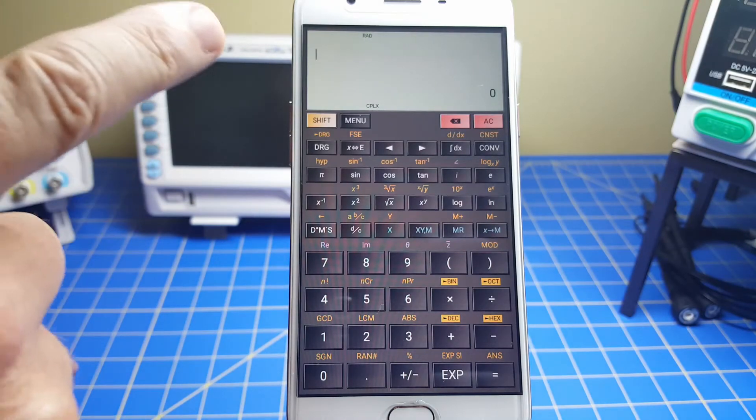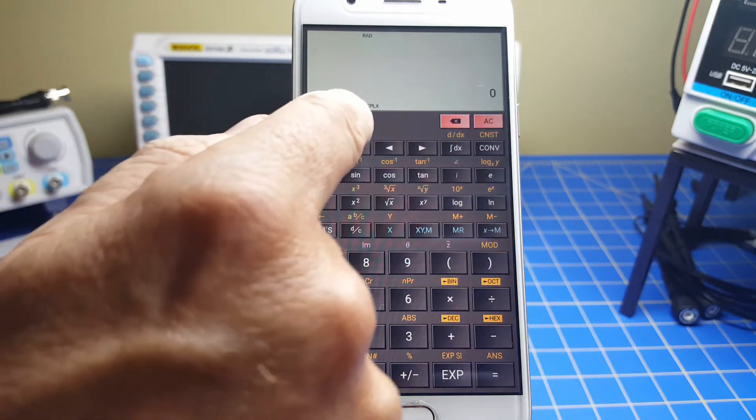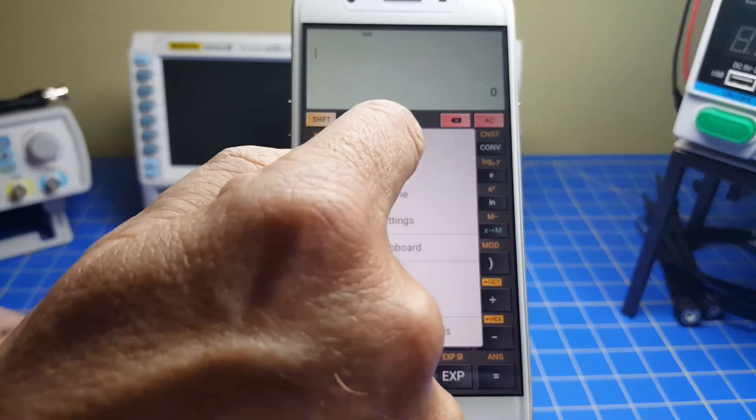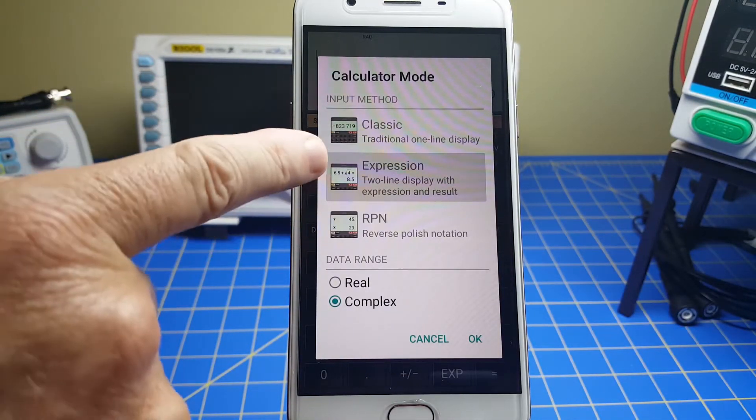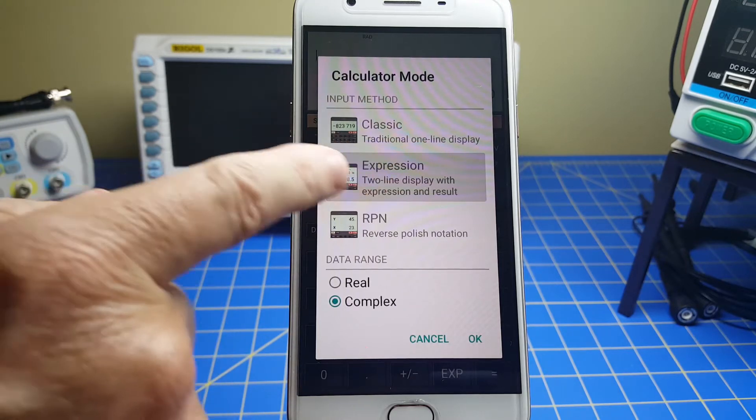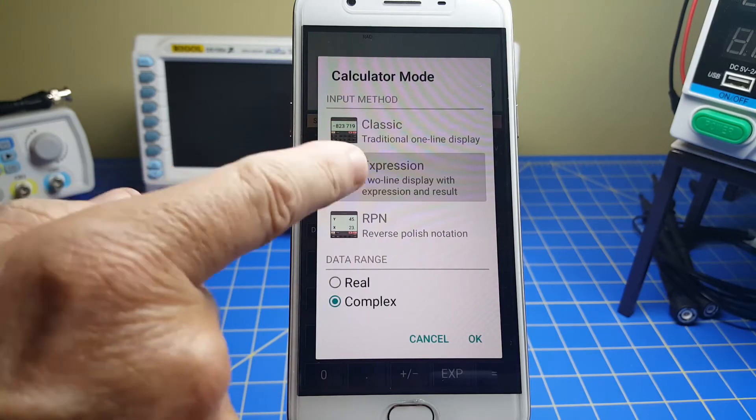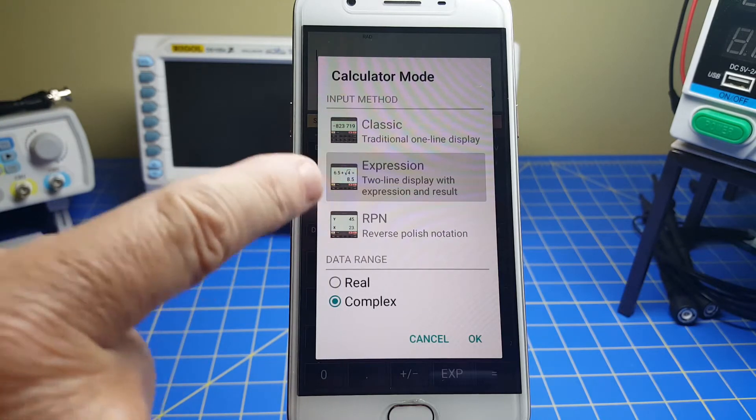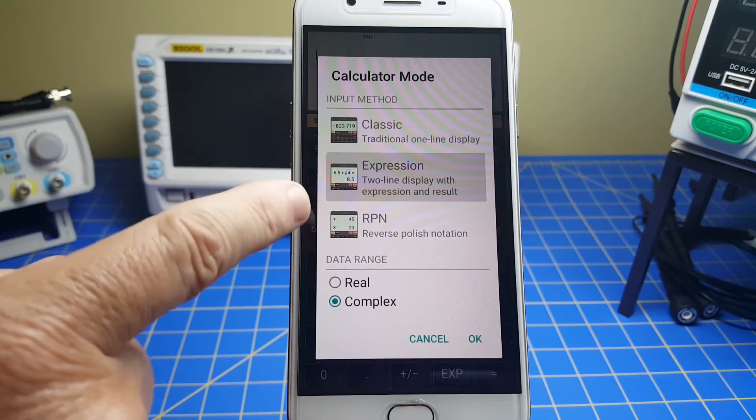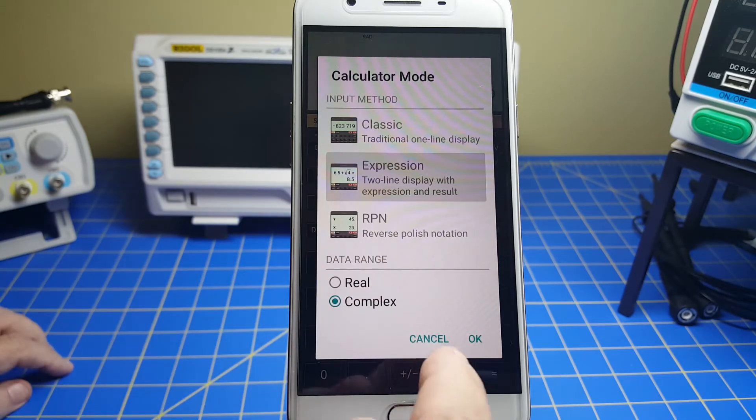Now, I want to just show you some of the great functionality this has. I'll go to the menu button and the first one is mode. Now, it's got three modes you can go into. I normally keep it on expression mode, which is a two-line display where you can show expressions and fractions and that kind of thing. Classic is one line or RPN. Now, again, this has RPN. For those who like RPN, it's got it. And you can also use real or complex. I always keep it on complex. So great functionality.